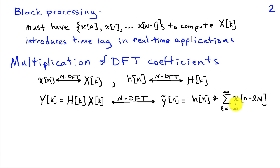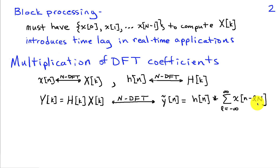This is a consequence of the fact that we are sampling in frequency. The DFT samples the discrete time Fourier transform. Just as sampling in the time domain introduced replication in the frequency domain — where the spectrum was replicated at multiples of the sampling frequency — the same sort of thing happens here. When we sample in frequency, we get replicates of the signal in the time domain, shifted by capital N. So this is clearly not ordinary convolution.